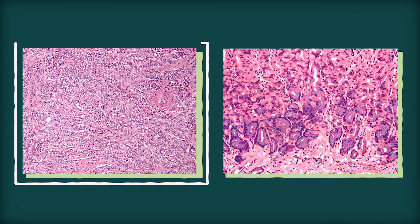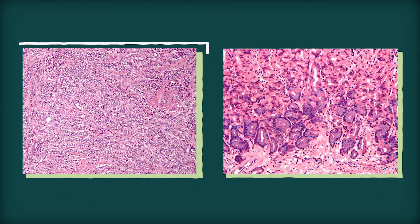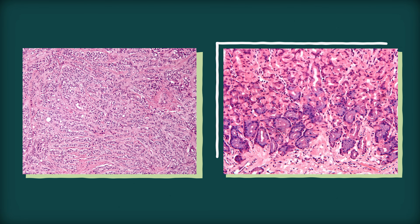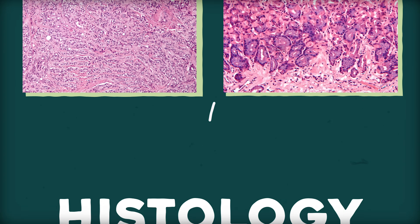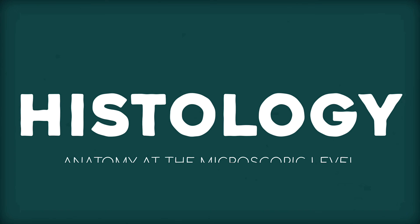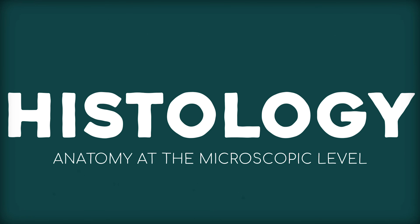Studying anatomy at the whole body level is straightforward enough, but it gets harder at the microscopic level. This jumble of cells looks just like this jumble of cells, even though they're totally different organs. This study falls within the field of histology — anatomy at the microscopic level.